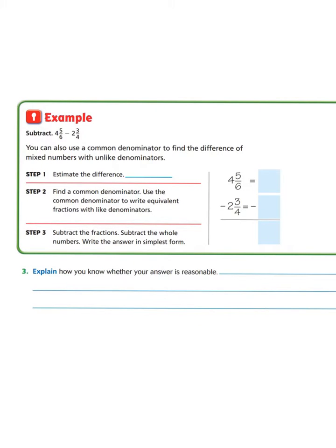Now let's take a look at another example, except this time we're actually going to be subtracting mixed numbers. Our mixed number is 4 and 5/6 minus 2 and 3/4. You can also use a common denominator to find the difference of mixed numbers with unlike denominators. Step 1 is to estimate the difference. Since we're looking at 5/6, we have 5 out of 6 parts present, so we're only missing 1 part. We can round 4 and 5/6 to 5.